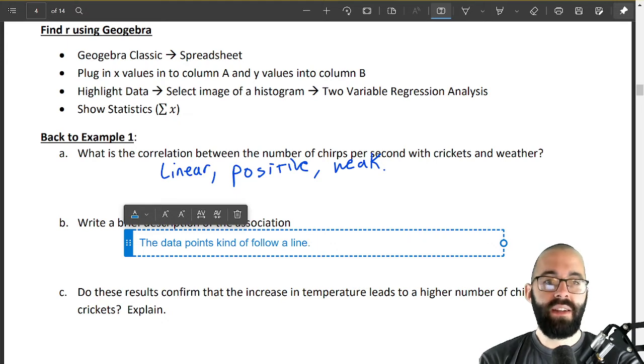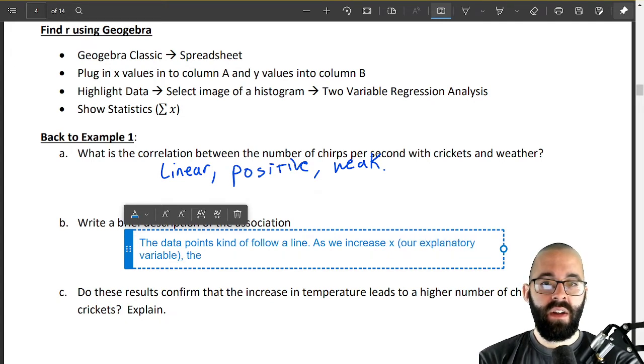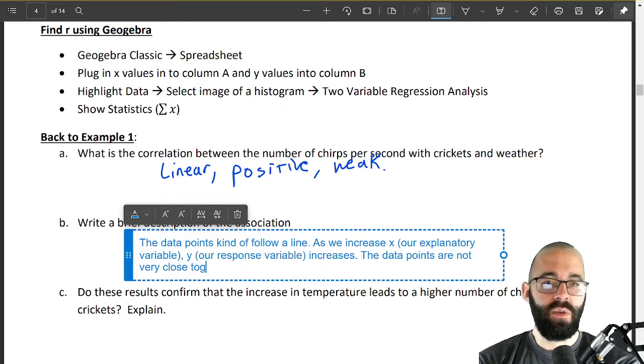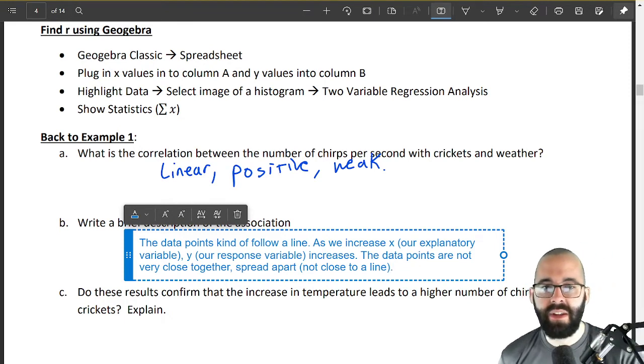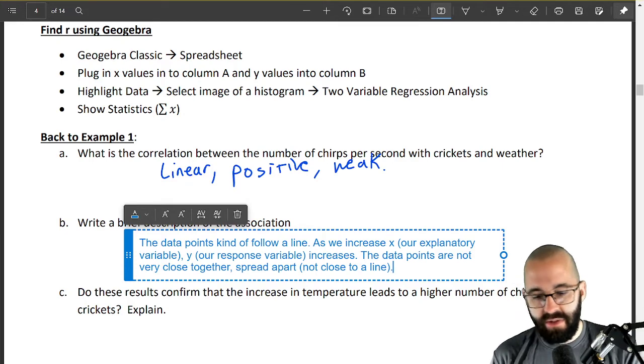Positive means as we increase x, remember that's our explanatory variable, y our response variable increases as well. That's what that positive means. And then weak, the data points are not very close together, they're kind of spread apart, not close to a line. A bunch of ways to describe this, I'm kind of using plain English to kind of answer or explain what these numbers from above mean.